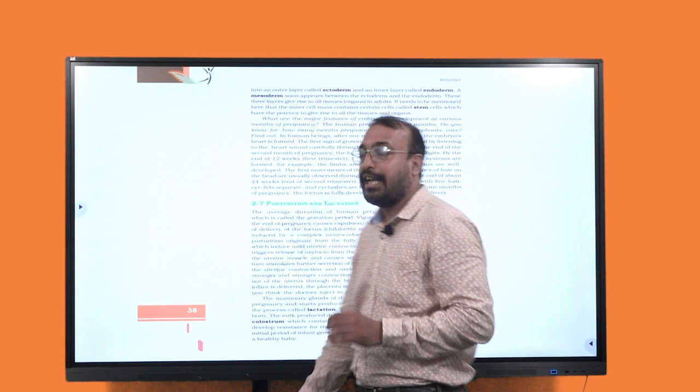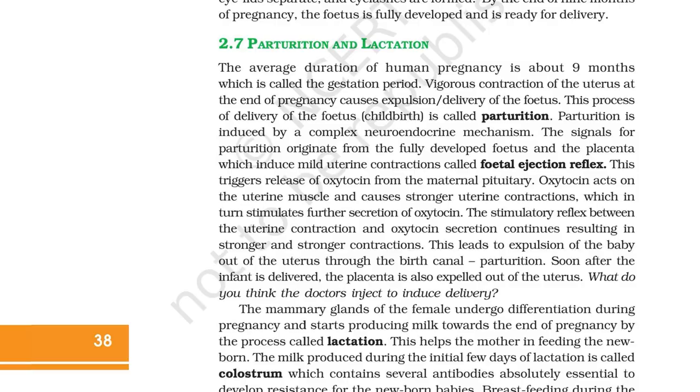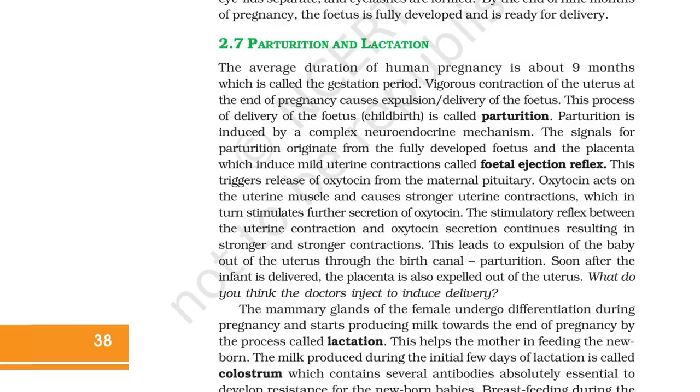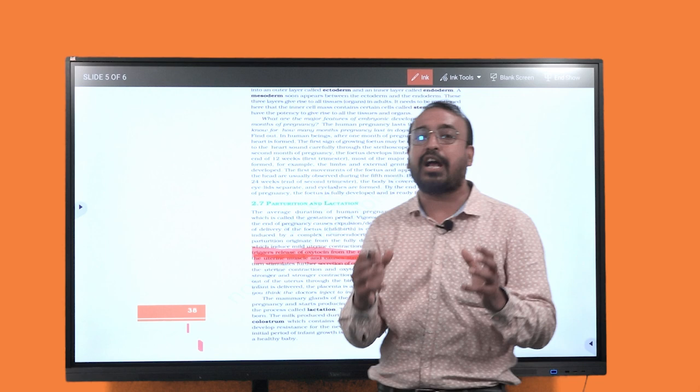Then you can see NCERT volume 2 page number 38, Human Reproduction and Lactation. This part is about fetal ejection reflex. This fetal ejection reflex triggers the release of oxytocin from the maternal pituitary. It says that oxytocin acts on the uterine muscles and causes stronger uterine contractions.